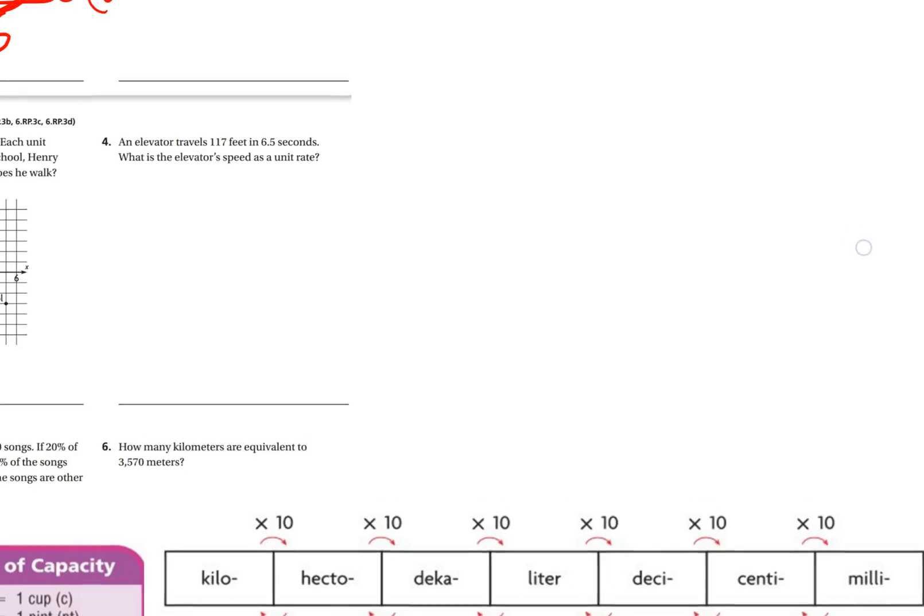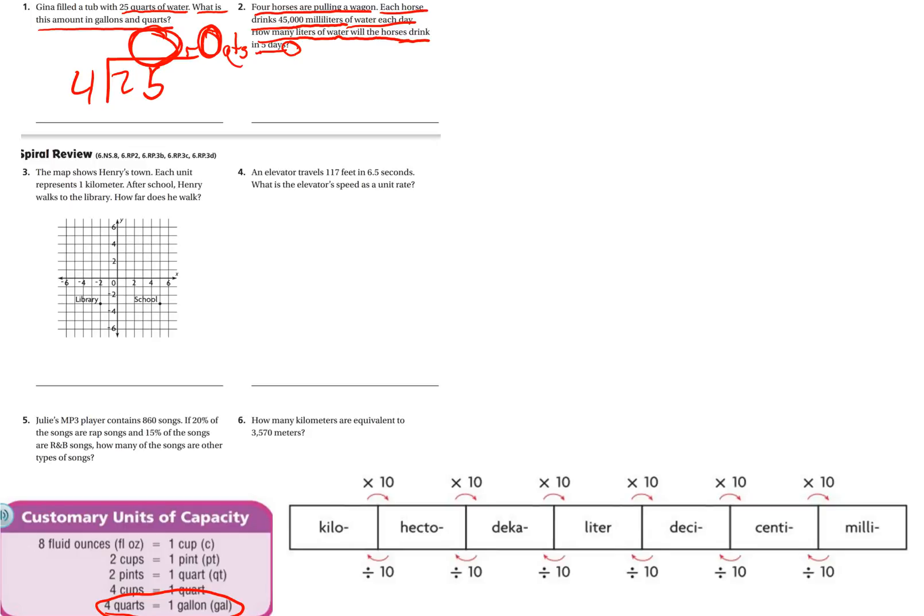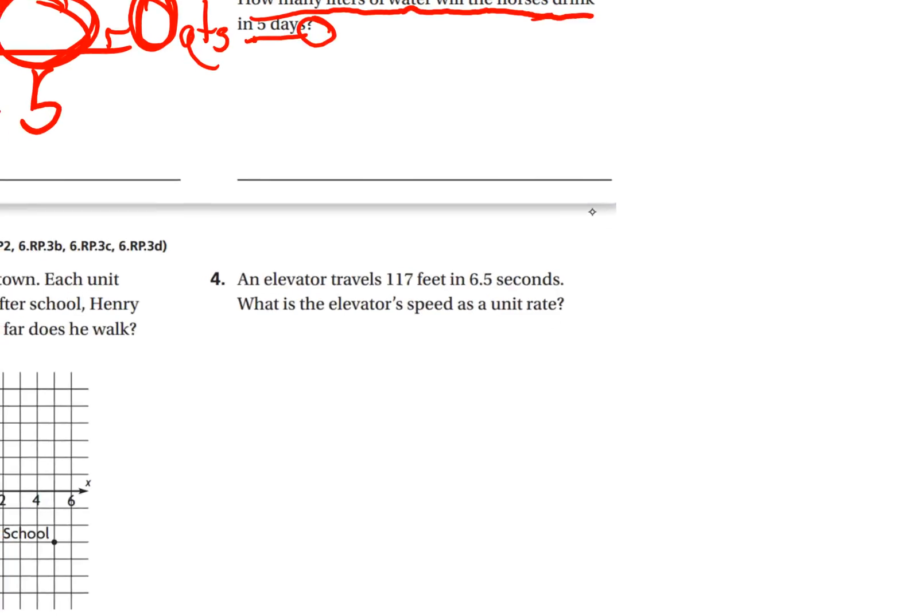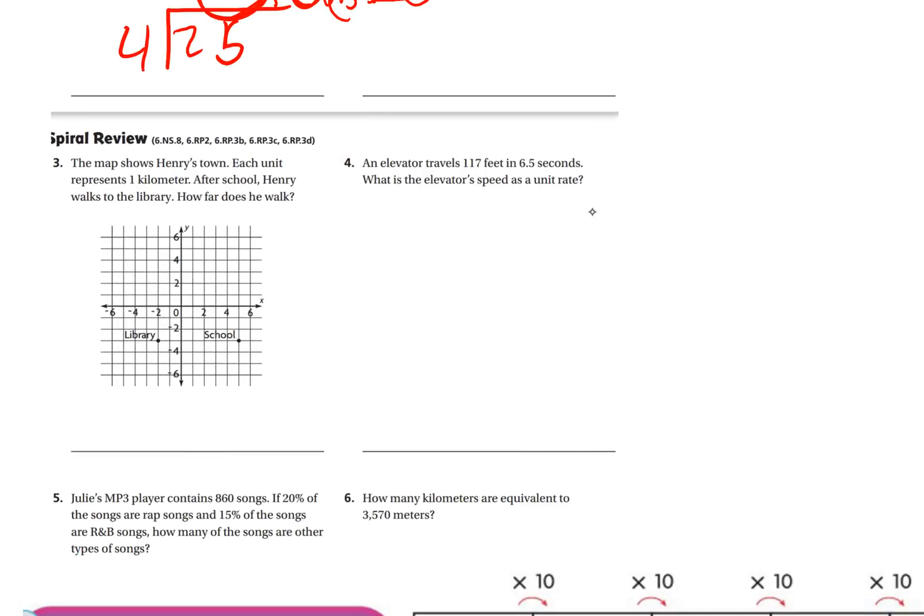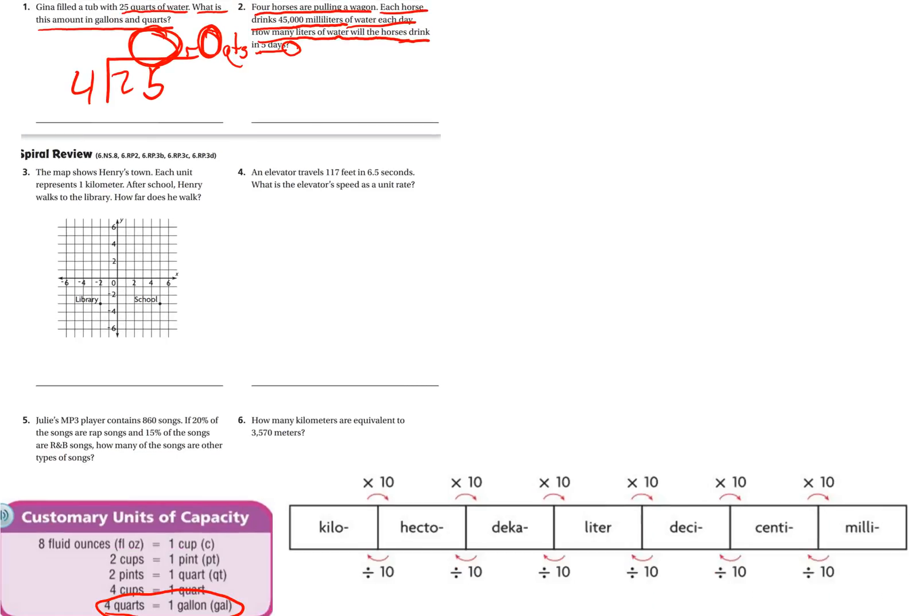So I'm going to convert that 45,000 milliliters into liters first. So to do that, I'm moving to the left one, two, three. So I moved to the left one, two, three, so this becomes forty-five point zero, or just forty-five. Now I'm going to multiply that times the four horses.